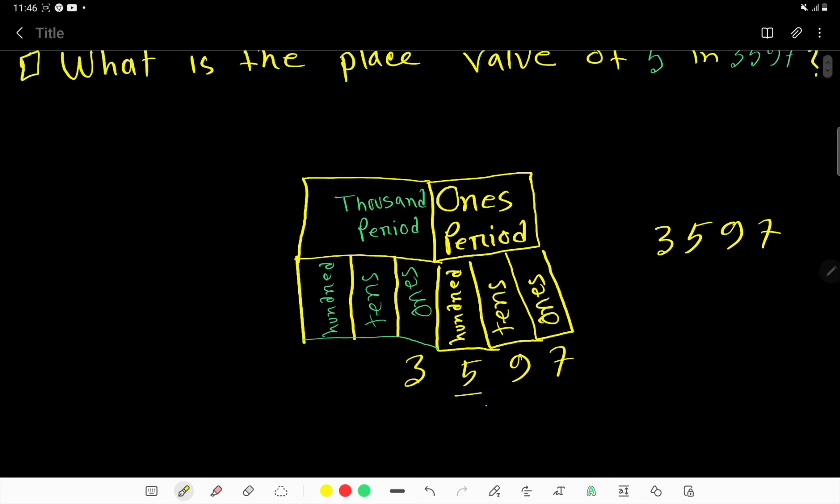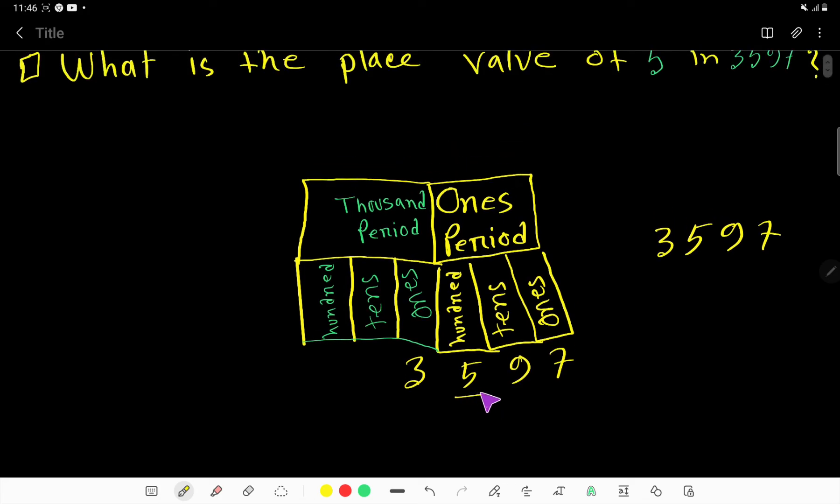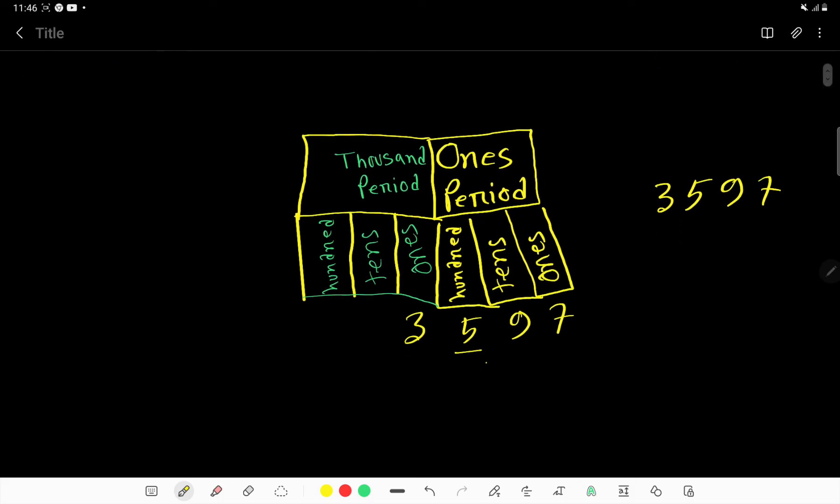Our targeted number is five. We would like to find out the place value of five. So we have to count the place: ones place, tens place, hundreds place. The place value of five is five hundreds.